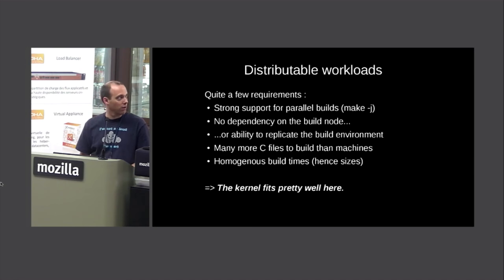Obviously the network must not be saturated. That's not obvious, because the way distcc works — preprocessing locally and offloading the result to remote nodes — involves huge network transfers. So it's important to consider this.